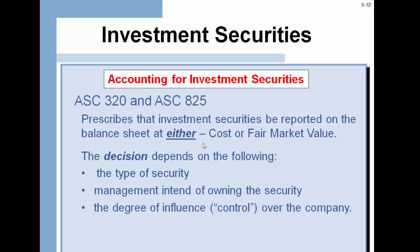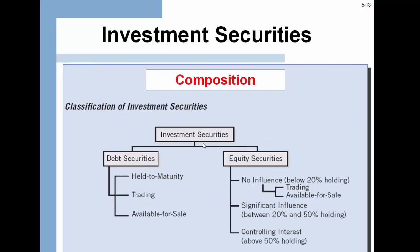There are certain percentages or guidelines established for those classifications. Investment securities include both debt securities and equity securities. For debt securities you have three kinds: held to maturity, trading, and available for sale. On the equity side, below 20% holding there is no influence, but you still see the trading and available for sale categories. Then you have significant influence at 20% to 50% and controlling influence above that. Each classification is based on what an organization intends to do with a specific type of security, either debt or equity.